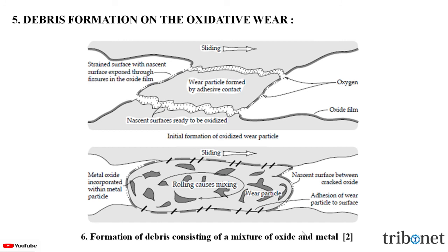Here, we can see the initial formation of the oxidized wear particle, which is like a strained surface with a nascent surface exposed through the fissures in the oxide films, and a secondary mechanism of mixing of the oxide and the metal with further oxidation.